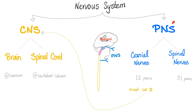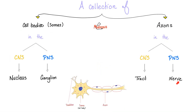The nervous system is divided into central — just the brain and spinal cord — and peripheral — anything coming out of the brain as cranial nerves or out of the spinal cord as spinal nerves. A nerve is an axon or group of axons in the peripheral nervous system. Inside the brain, we don't call it a nerve — we call it a tract.